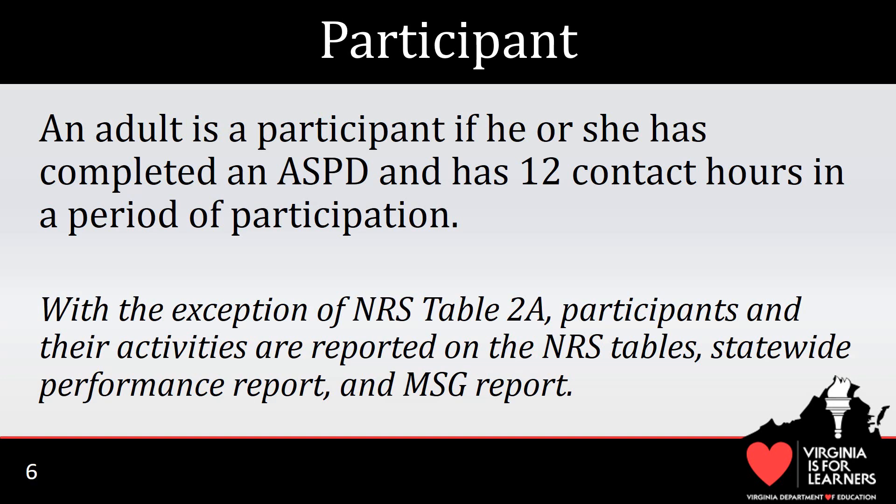Some things to keep in mind about participants: a participant must be an eligible individual. No one under 16 is considered an eligible individual. No one 16 or 17 years old is considered an eligible individual without documentation releasing him or her from compulsory school attendance. No one with a secondary school diploma or recognized equivalent is considered an eligible individual unless he or she has pre-tested below the 12th grade level using any of the state-approved assessments. An ASPD is considered complete when all required information is provided on the form and in SSWS. Contact hours may be any combination of in-person and distance learning attendance as long as the attendance is consistent with the delivery of adult education and literacy services in accordance with WIOA.